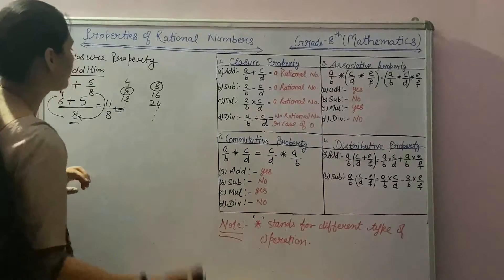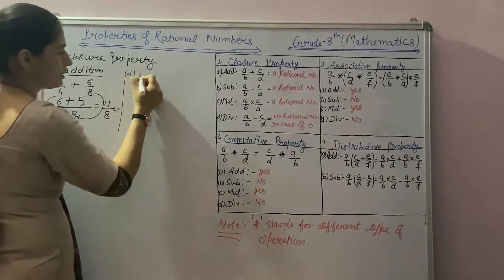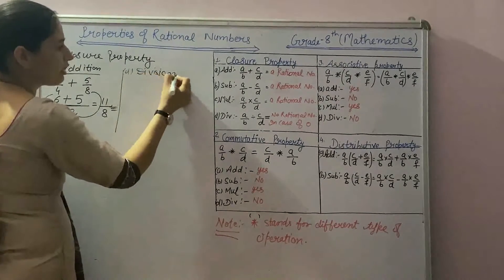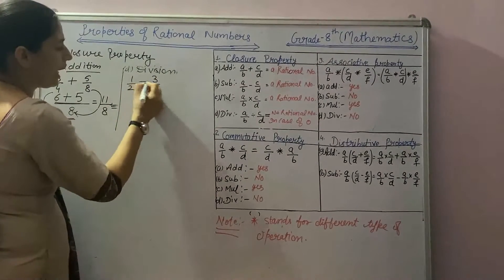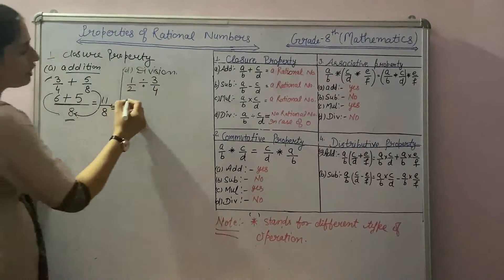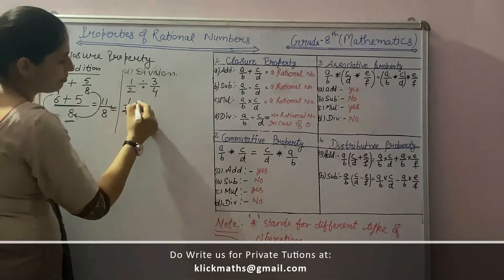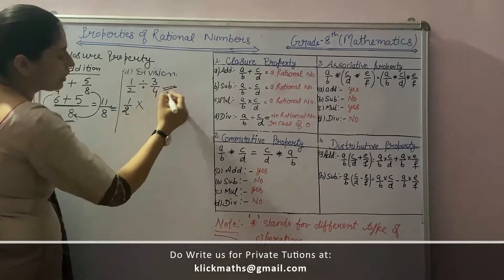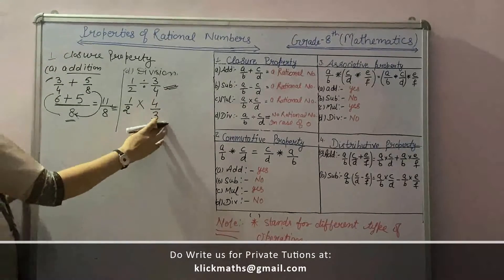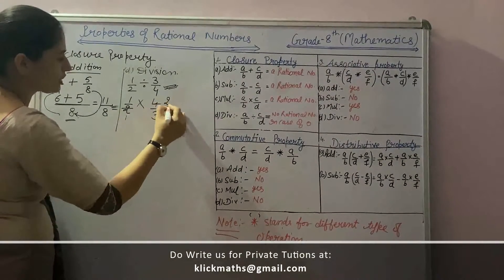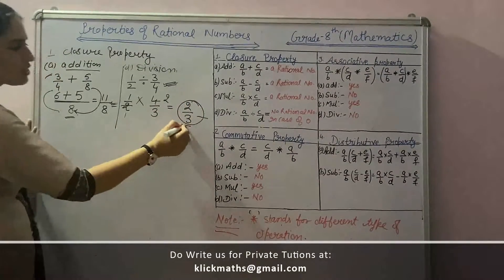Let's check closure property for division. Take 2 rational numbers, 1 by 2 and 3 by 4, and divide them. When we divide 2 rational numbers, the sign will be changed — divide becomes multiply — and the right-hand side becomes the reciprocal. So 1 by 2 multiplied by 4 by 3: 2 ones are 2, 2 threes are 6. We get 2 by 3, which is also a rational number.